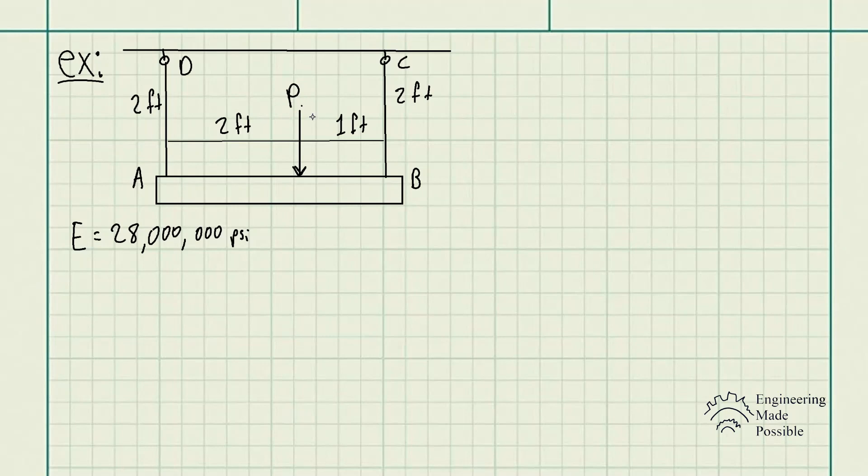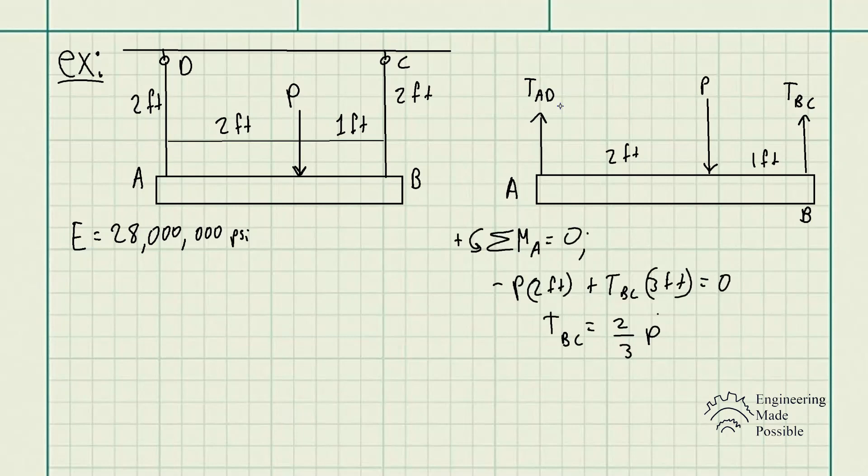First off, you could draw the free body diagram to do the static equilibrium to find the tensions in each of the cables. Drawing the free body diagram, we have the tension in cable AD, the external load P, and the tension in cable BC. To solve for each of these, we could go ahead and do the summation of moments with respect to point A.